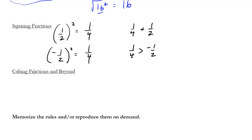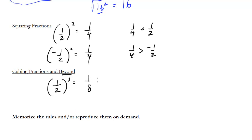We could also cube things. They don't really go much beyond cubing on the SAT — I included it here just to be thorough — but cubing is as far as we're really going to go most of the time. What would happen if I cubed one half? Well, I would get one eighth. And again, one eighth is smaller than one half, so that seems to be no problem.